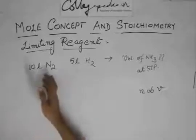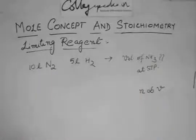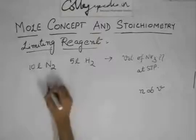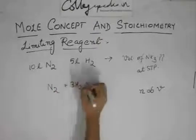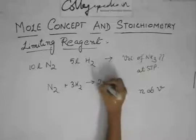By dividing by 22.4, you will get the number of moles. So first write the balanced equation: N2 plus 3H2 gives 2NH3. I think you know the balancing of this by now.